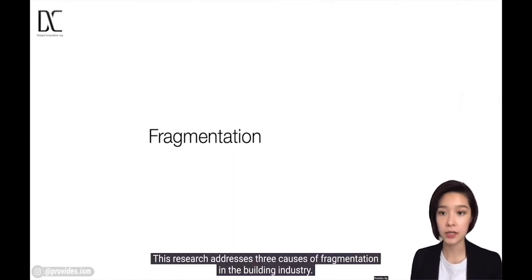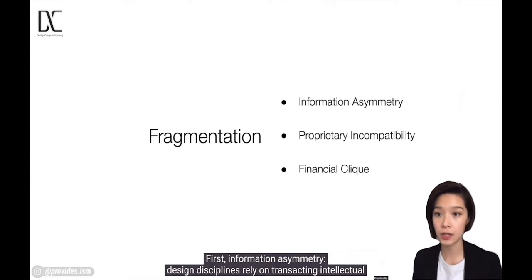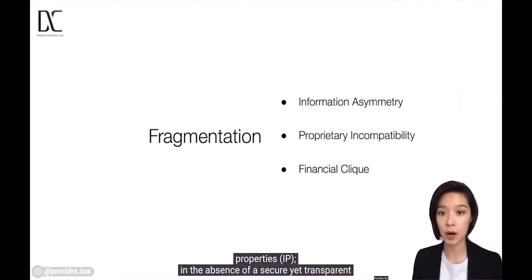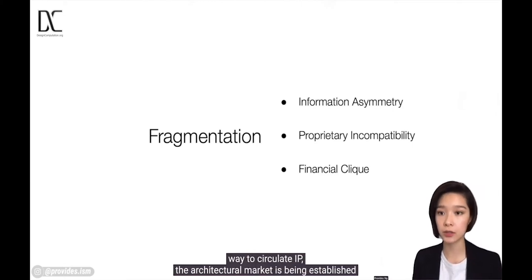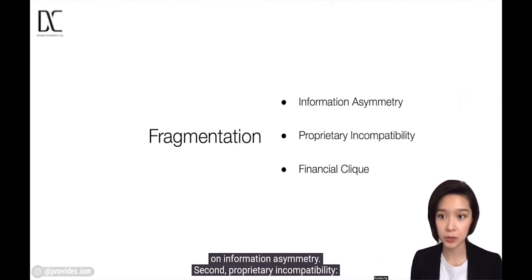This research addresses three causes of fragmentation. First, information asymmetry. Design disciplines rely on transacting intellectual properties. In the absence of a secured yet transparent way to circulate IP, the architectural market is being established on information asymmetry.